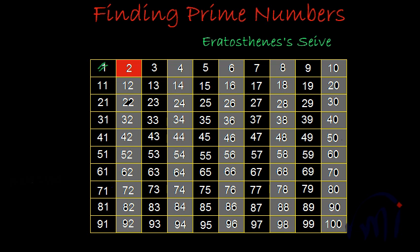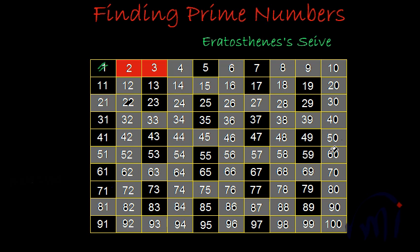We have our first prime number, which is two, and I am going to colour it red. Next, going left to right in the first row, the number after two is three, which is still unshaded. That means three is not a multiple of two, so three is a prime number. Now we have to shade all the multiples of three — every third number after three. The third number is six, which is already shaded. Other multiples of three — nine, fifteen — are now shaded.